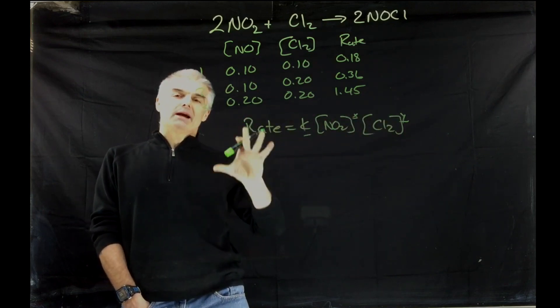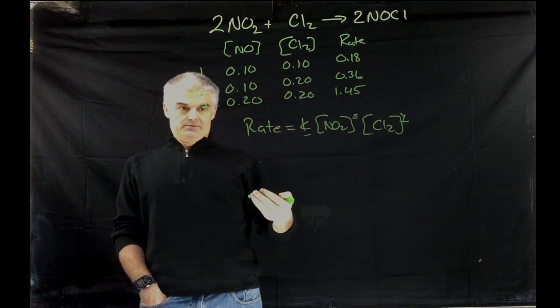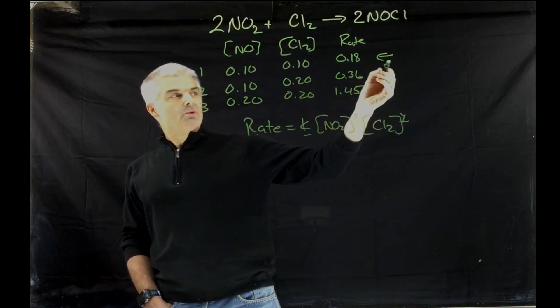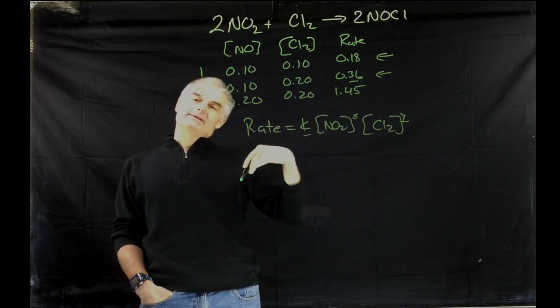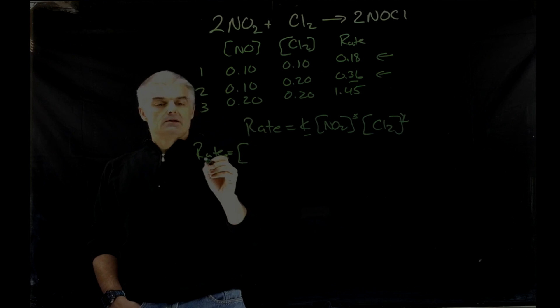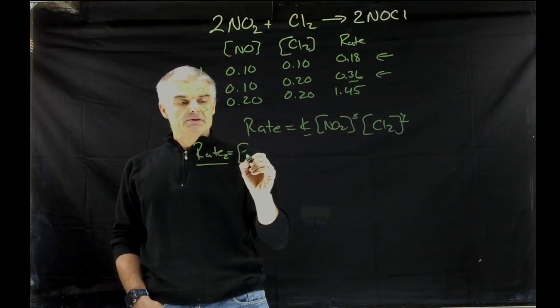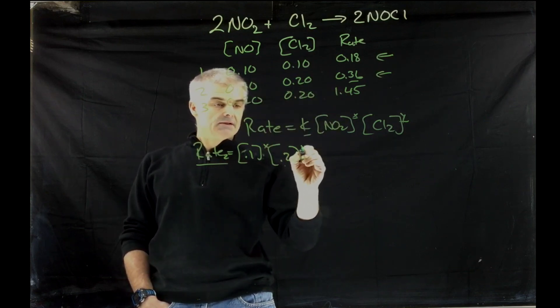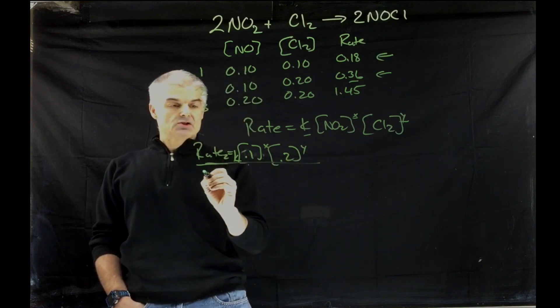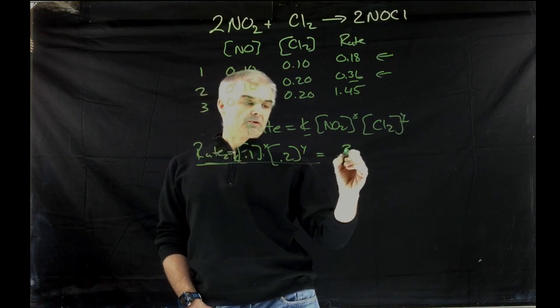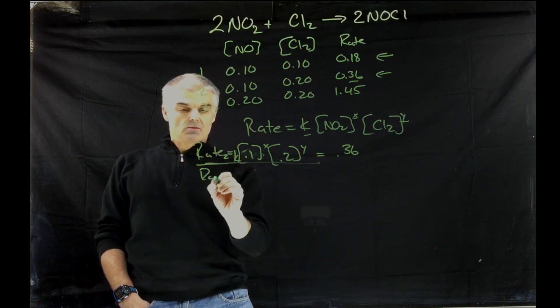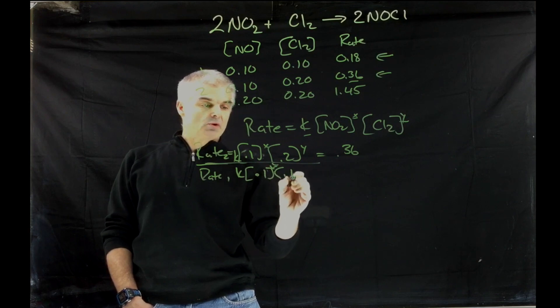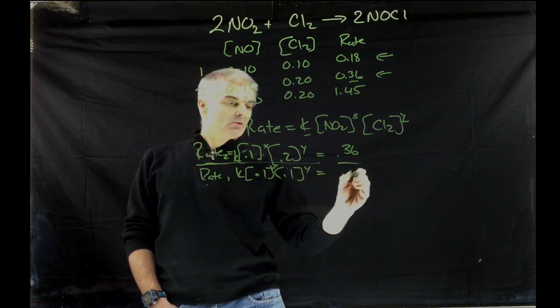So what you're going to do is divide reaction one by reaction two so that you can cancel out variables. So I'm going to take reaction number two and divide by reaction number one. The reason I do this is that the .36 is a larger number, and I don't want to have halves in the numbers. So I'm going to say rate two, this will be k times .1 to the x times .2 to the y. There's a k here, but you'll see how that cancels out. And I'm going to divide by rate one. By the way, that equals .36. And then I'll say for rate one, that's equal to k times .1 to the x times .1 to the y equals .18.